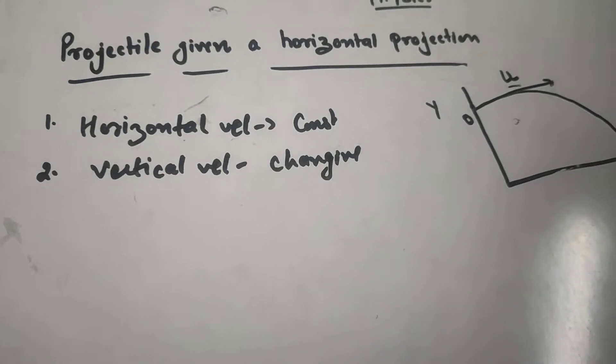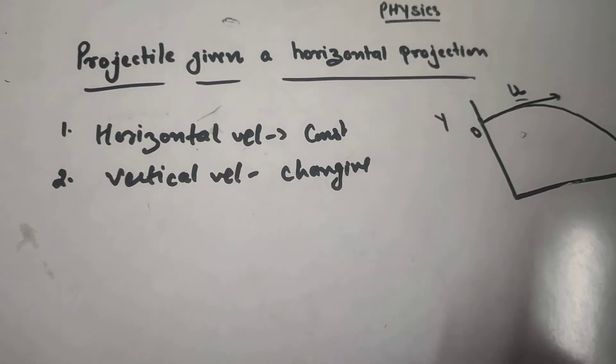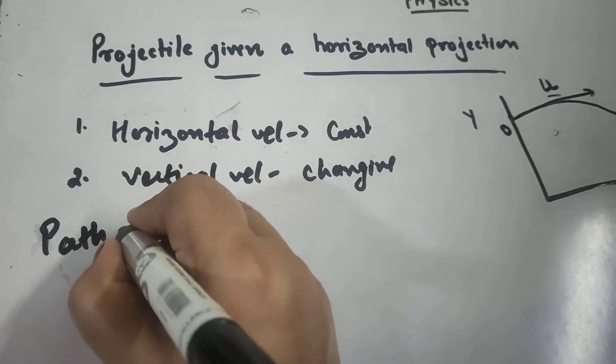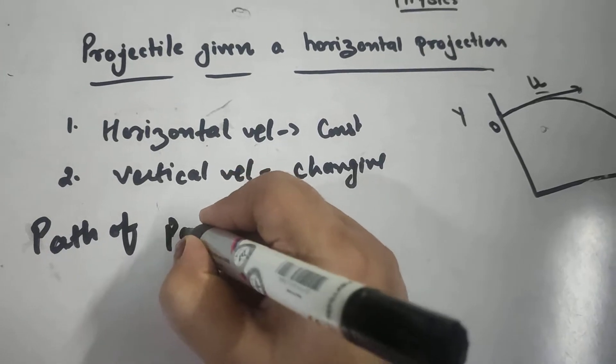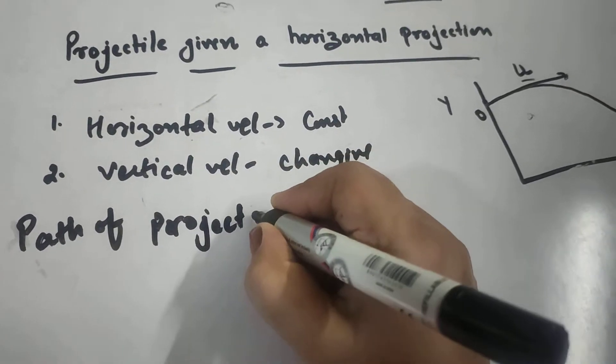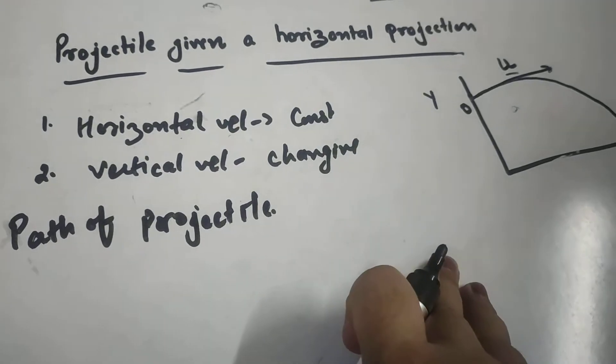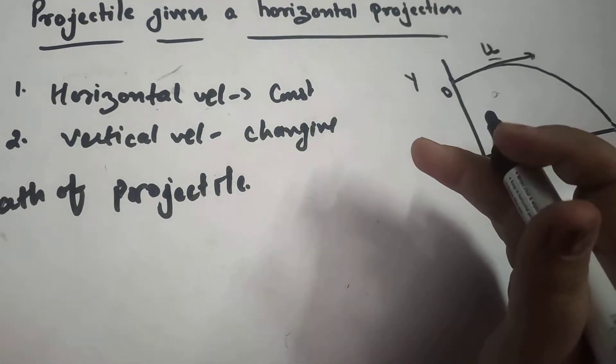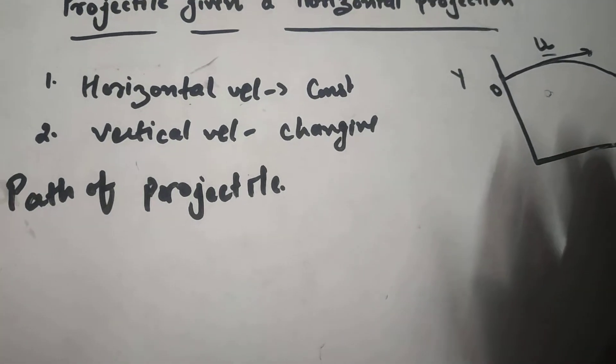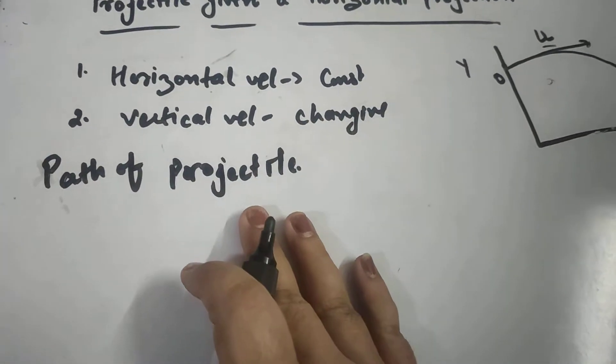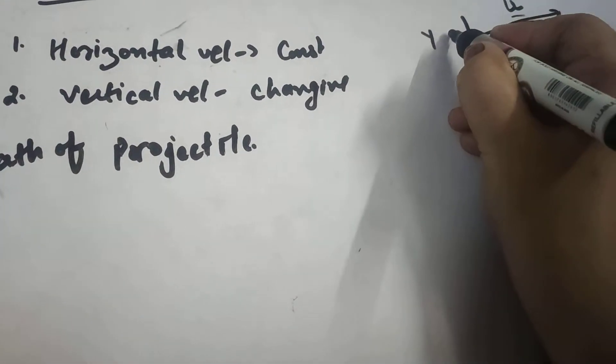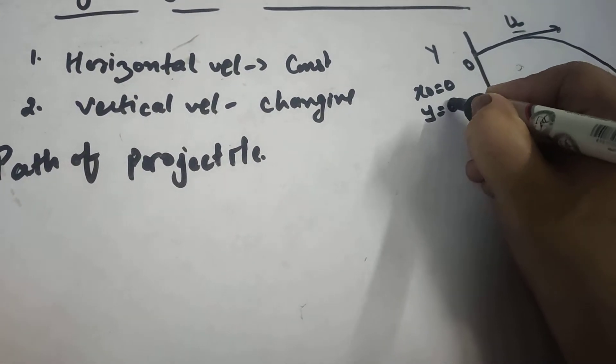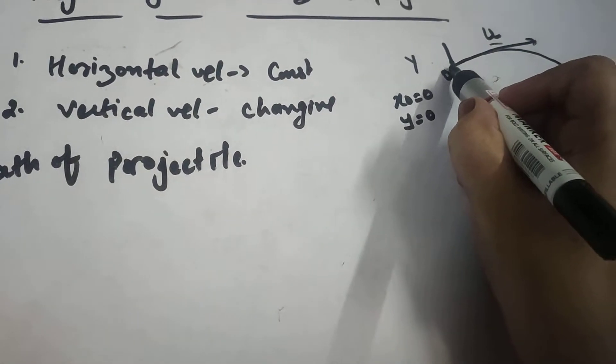Now let us find out the path of projectile. Path of projectile means we will find out the motion of the projectile along the horizontal direction OX and along the vertical direction OY. For this, let us consider initially at this point the particle is having position X naught equal to 0 and Y naught equal to 0, as O is considered as origin.